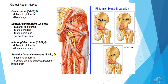The posterior cutaneous nerve of the thigh arises from the sacral plexus, with roots S2 and S3. It exits through the greater sciatic foramen, arising below the piriformis muscle, and passes downward on the posterior surface alongside the sciatic nerve.